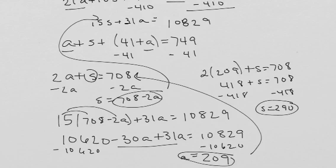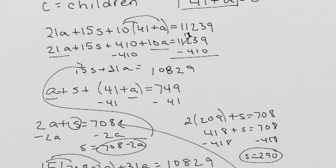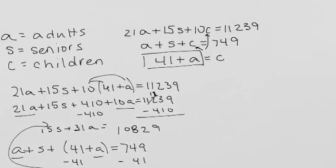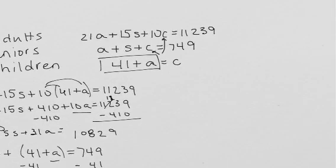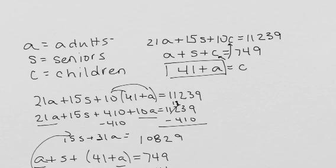Okay, so we know A is 209, S is 290. Let's go back up here and look at our work for C. So we can say adults 209, seniors 290. Well, if I add 41 to the number of adults I should get children. So 41 plus 209 equals C.